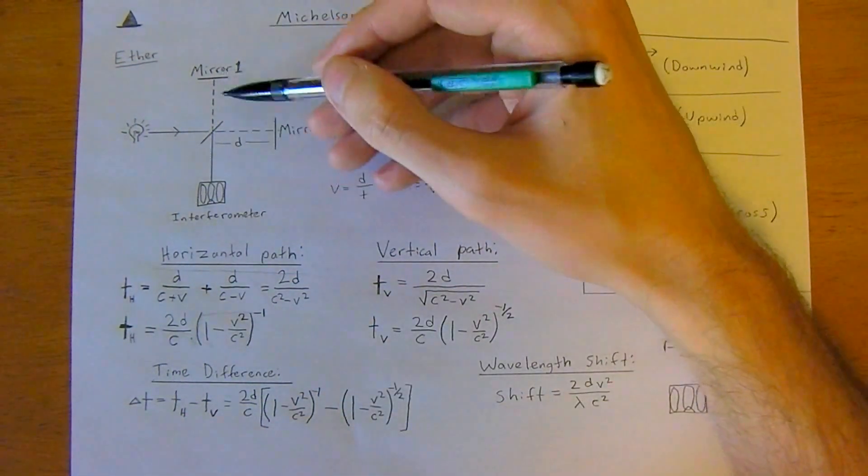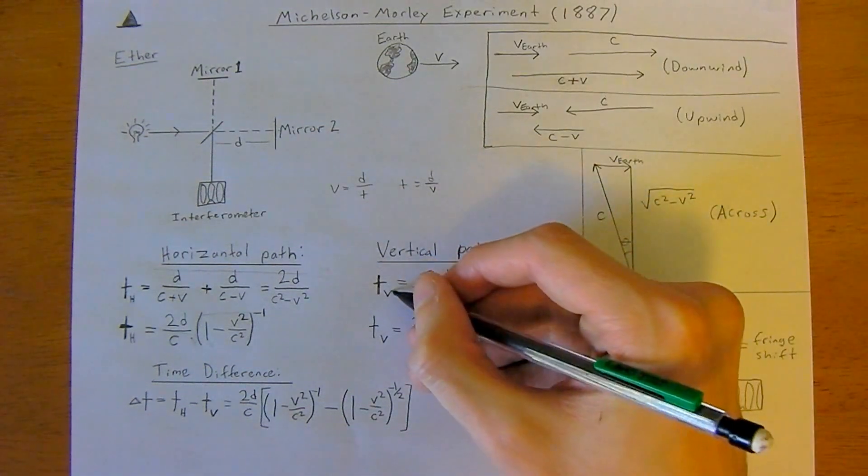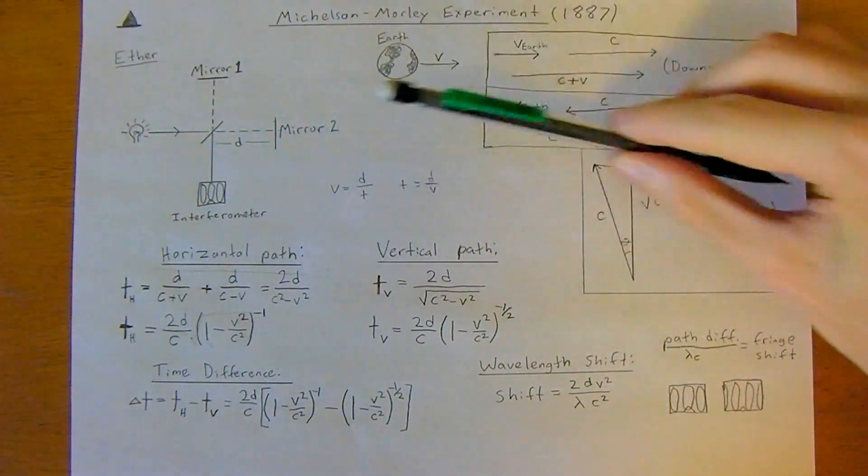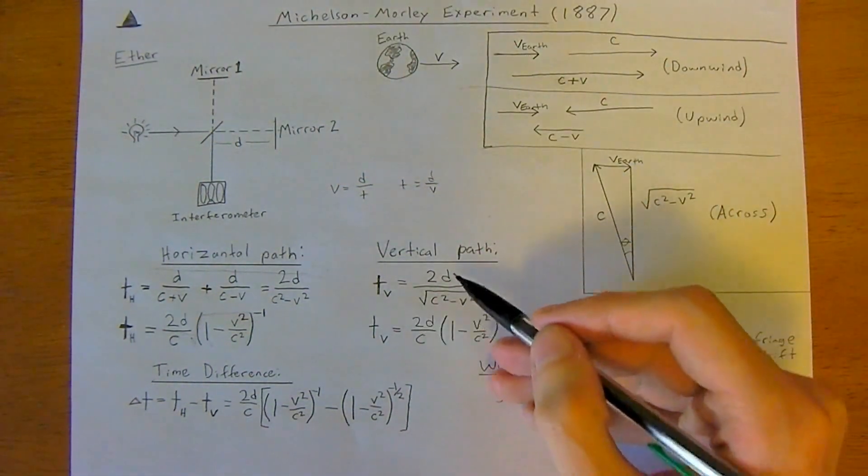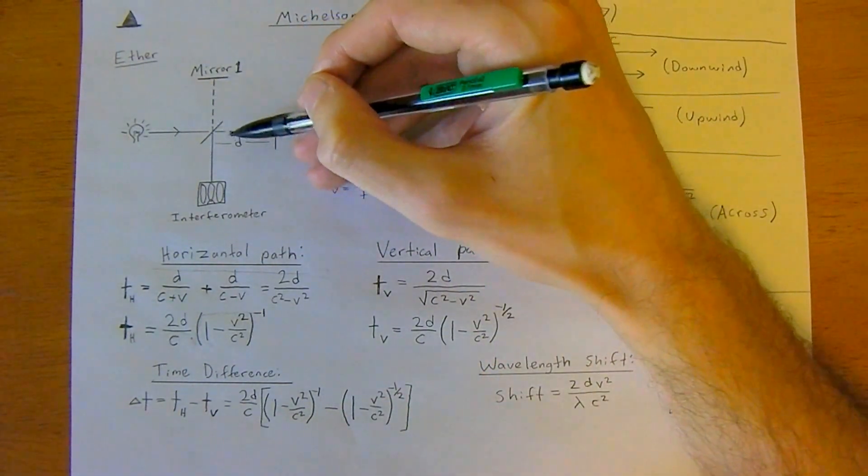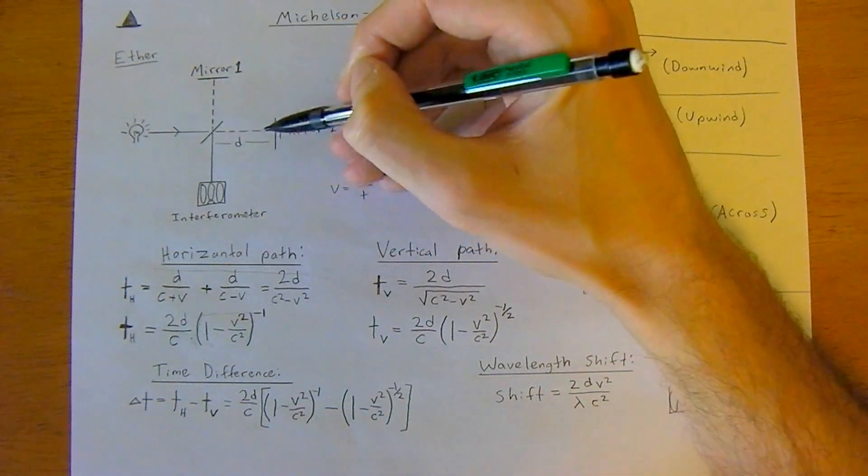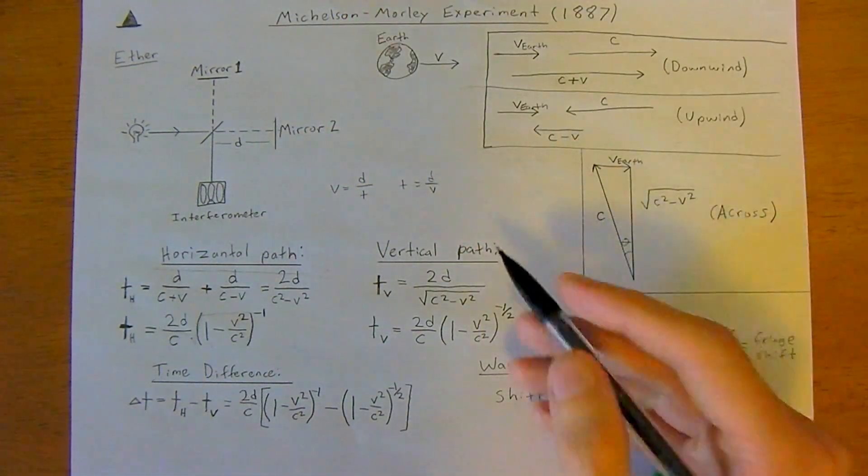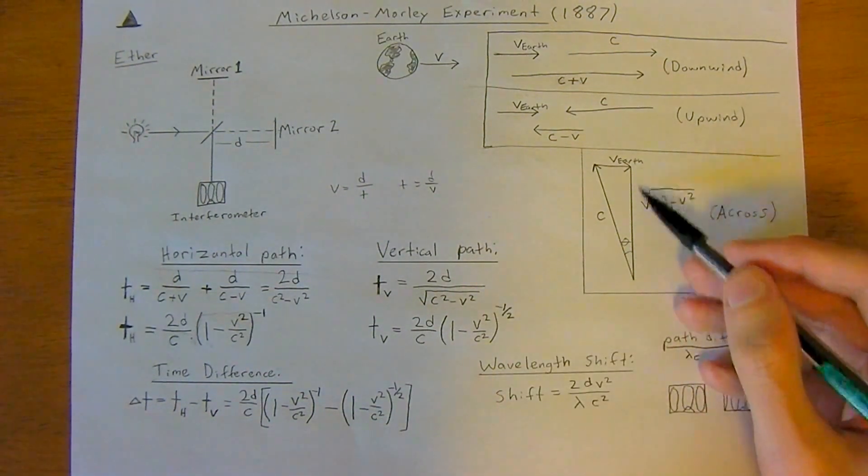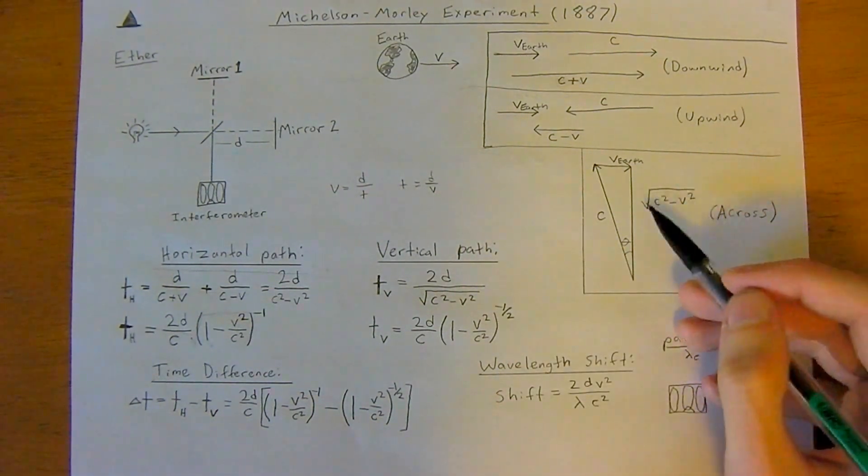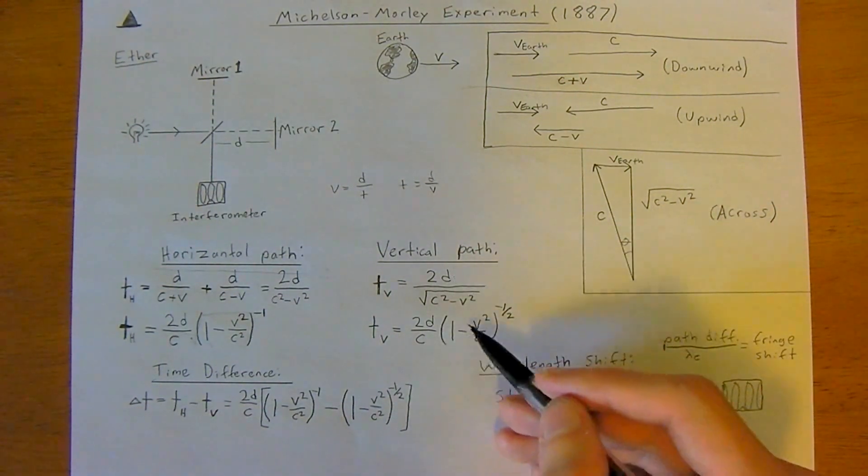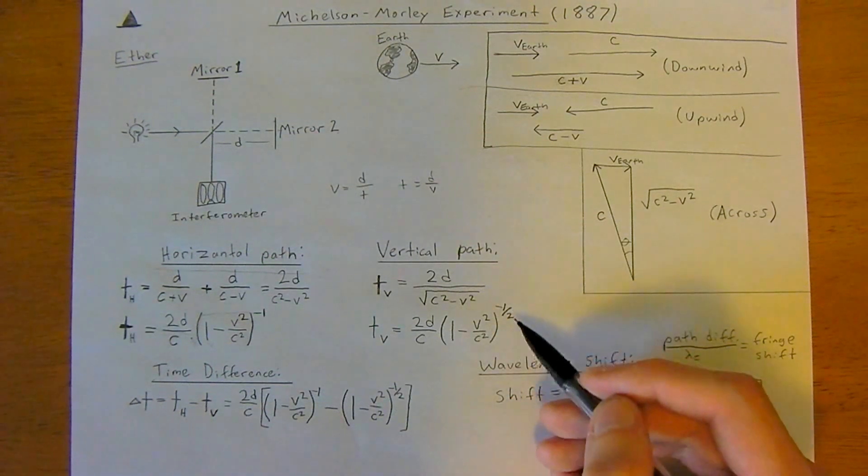In the vertical direction, the velocity in the perpendicular direction—remember earth's moving to the right—in the vertical direction we have 2d because we're traveling up and back. This is the same distance here as this distance here. So 2d divided by the perpendicular square root of c squared minus v squared. Again, we factor out d, so it's just 1 minus v squared over c squared to the negative one half, which is 1 over square root.